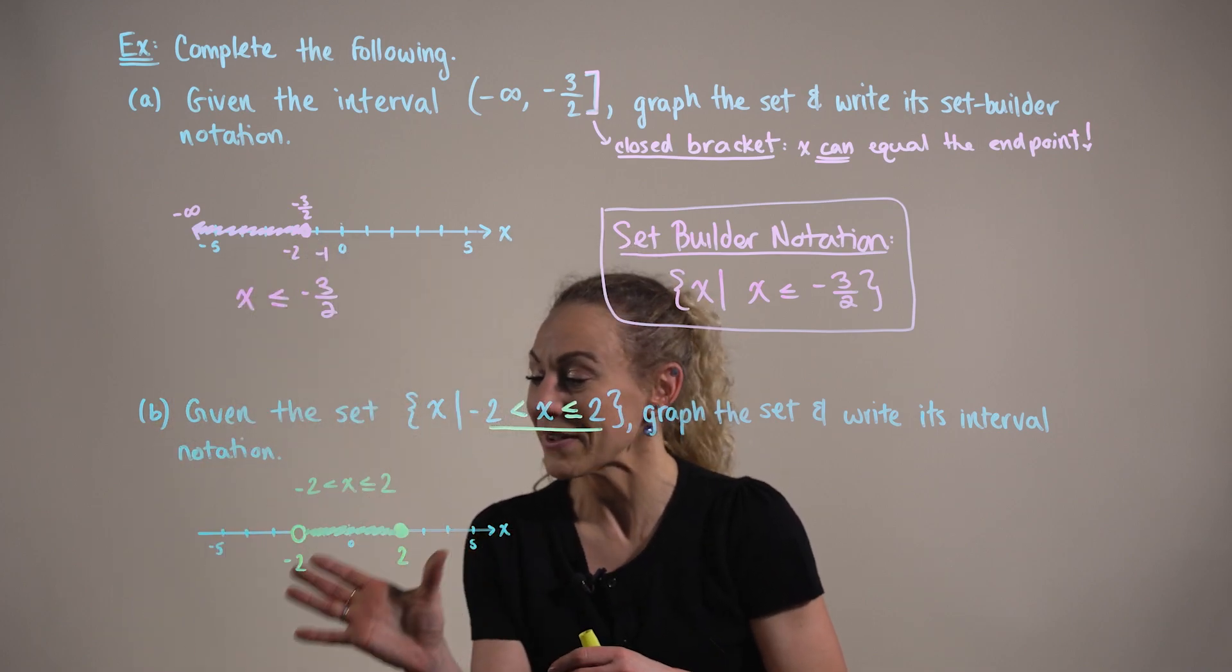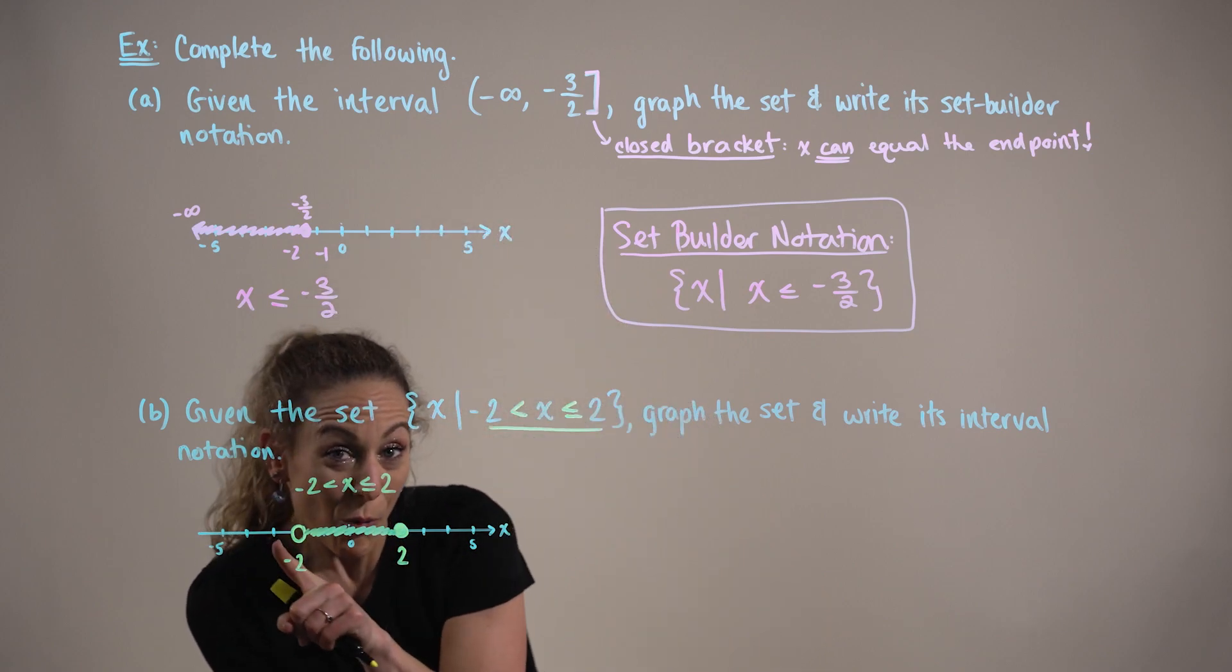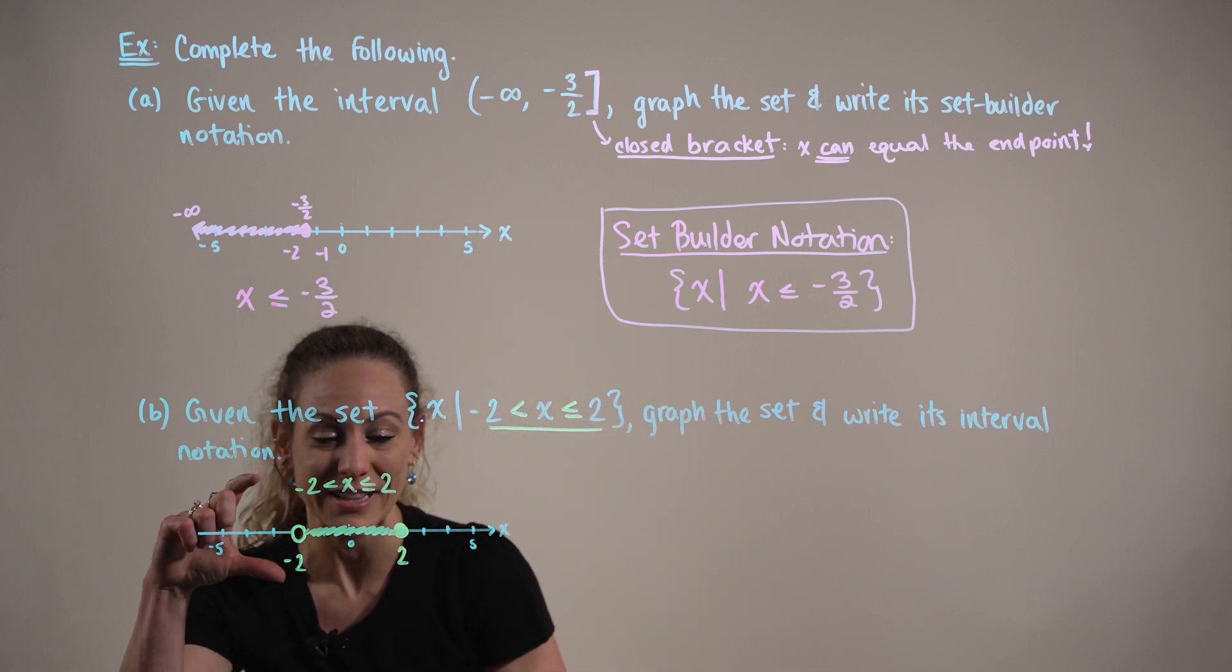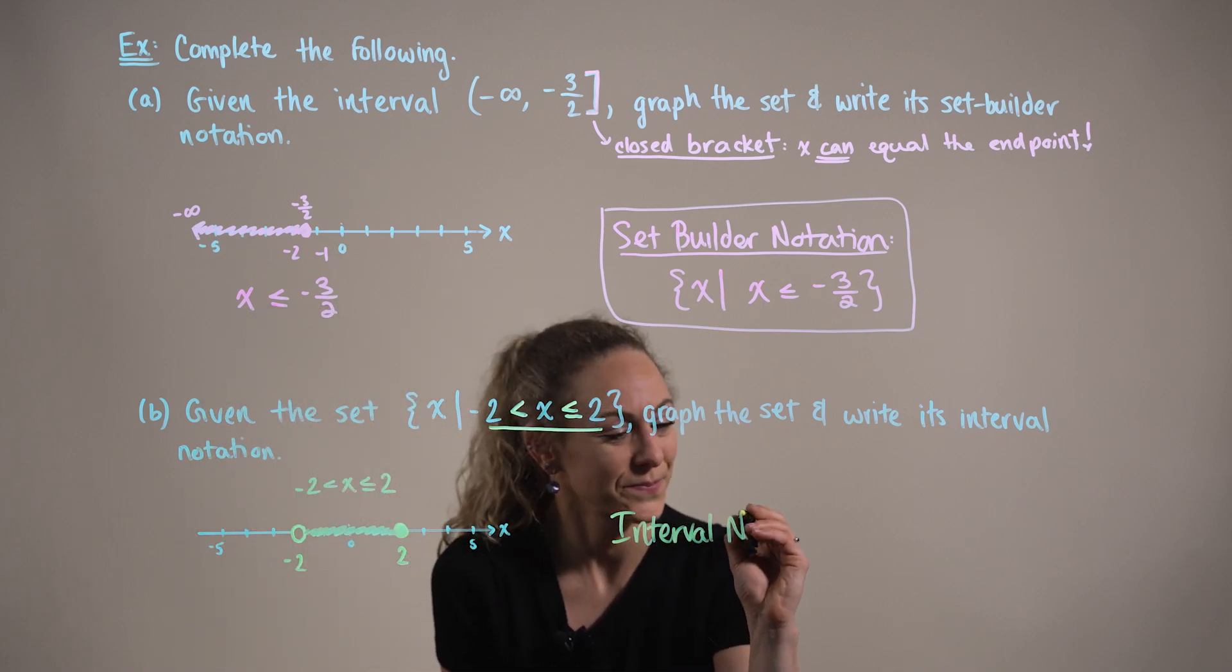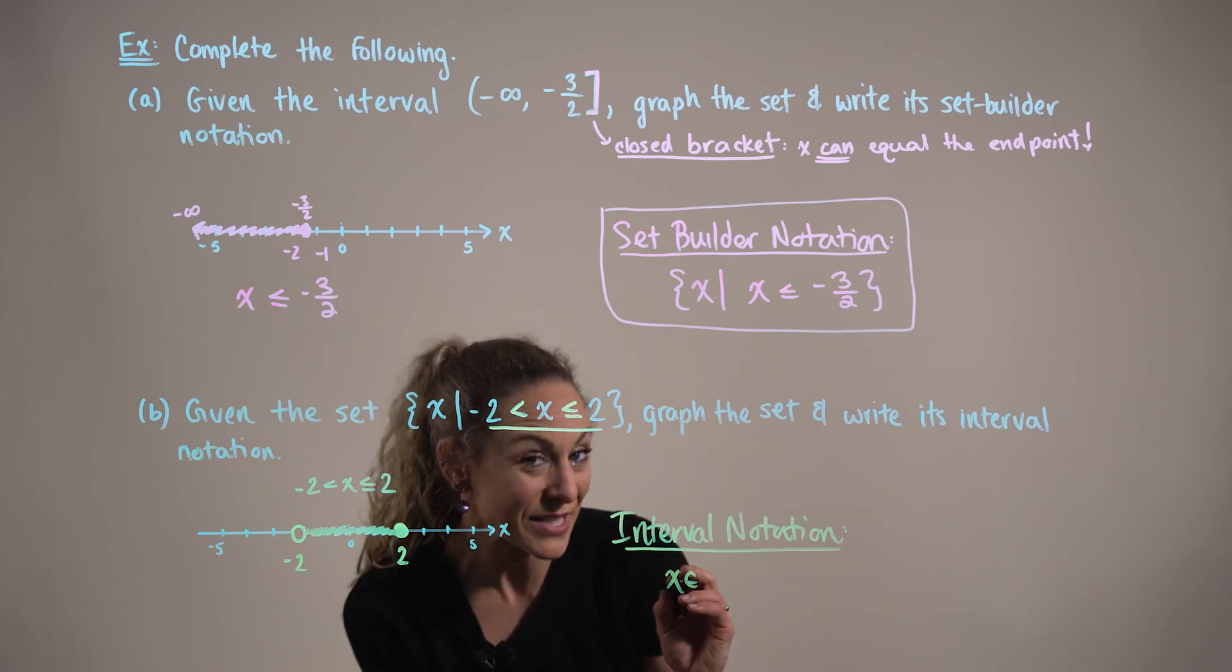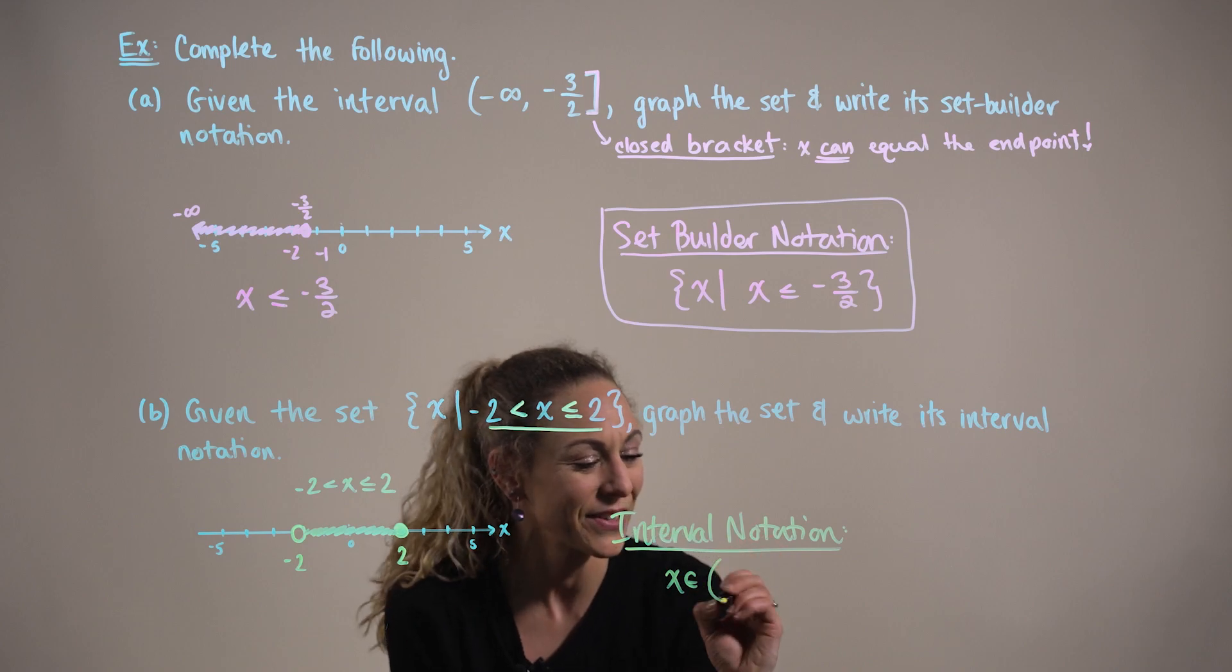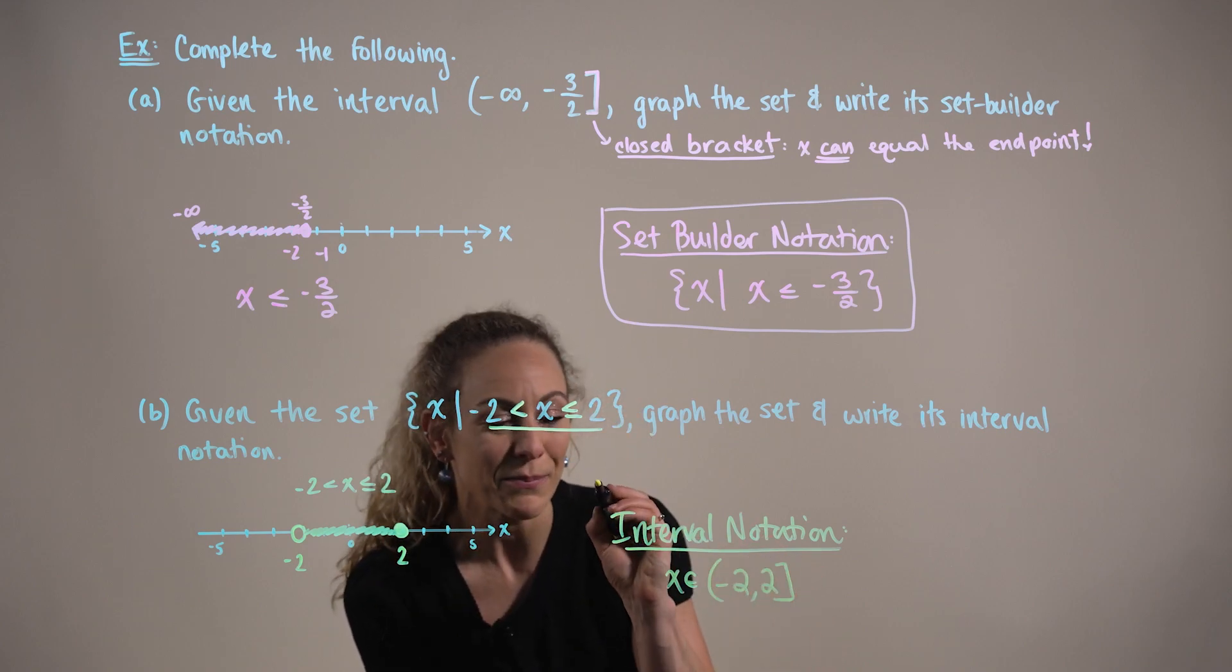So from here, we can now easily convert this into our interval form. Recall that open dots imply rounded parentheses, whereas closed dots imply square brackets. So as an interval, we would write this as x is an element of the half open interval from negative two up to and including positive two.